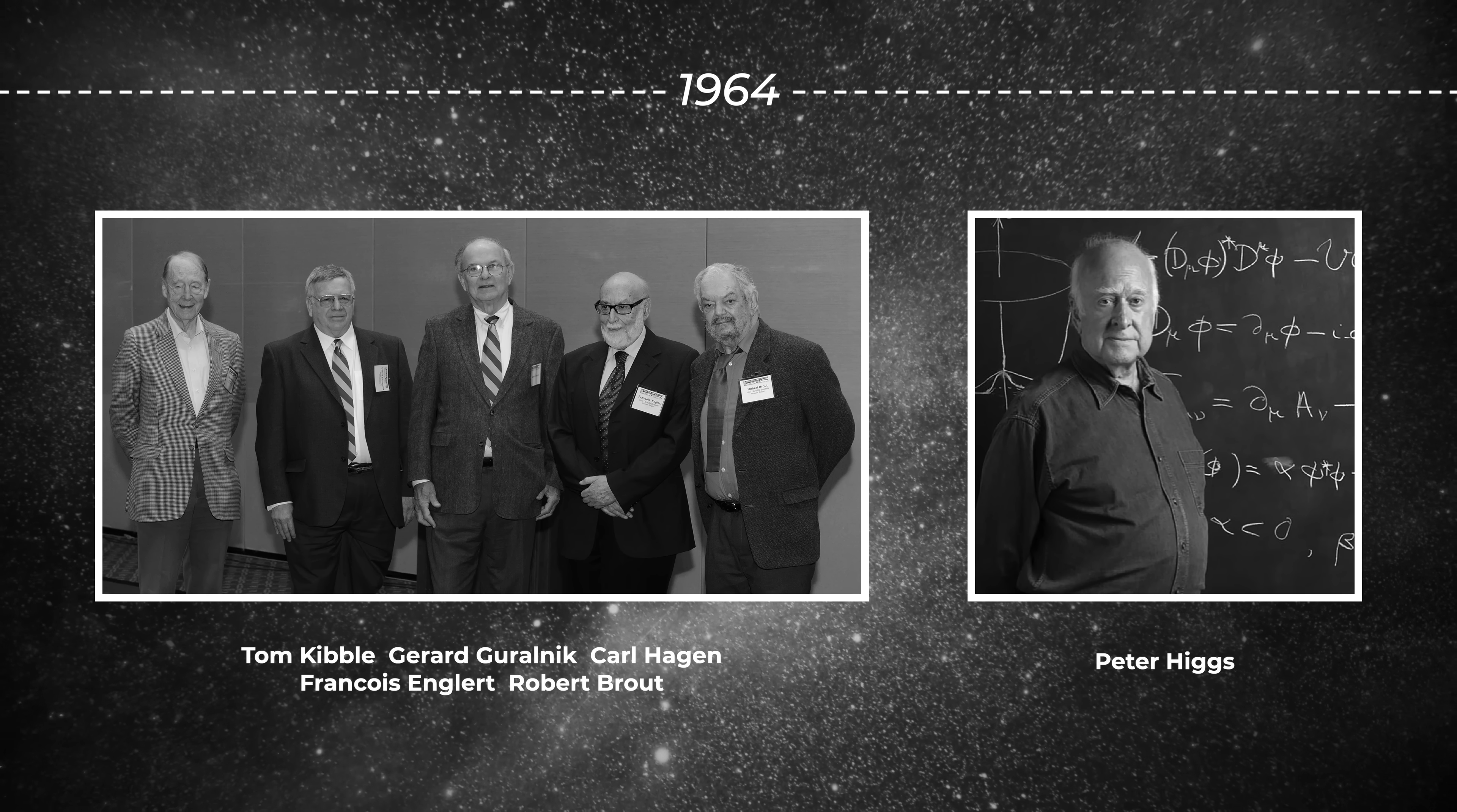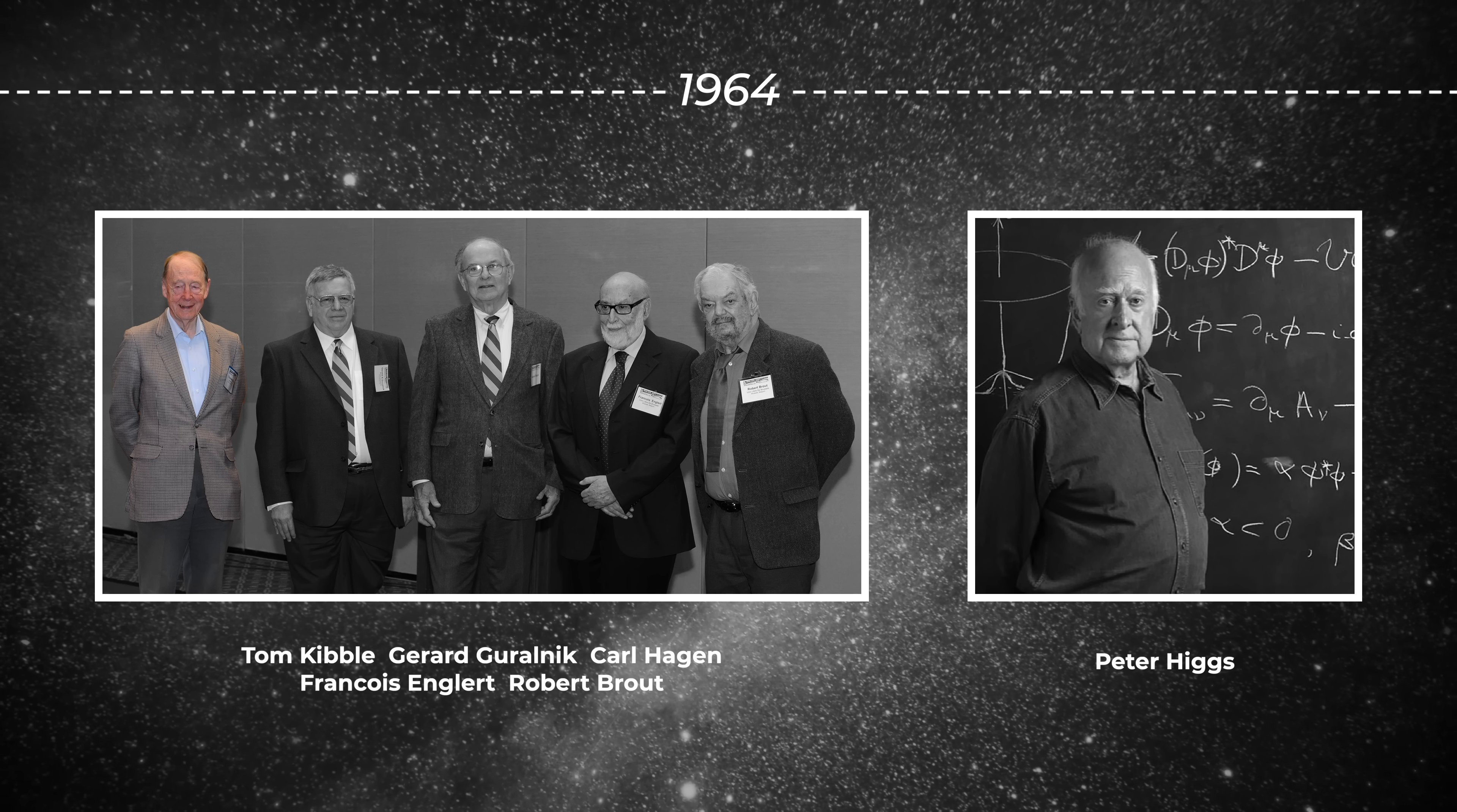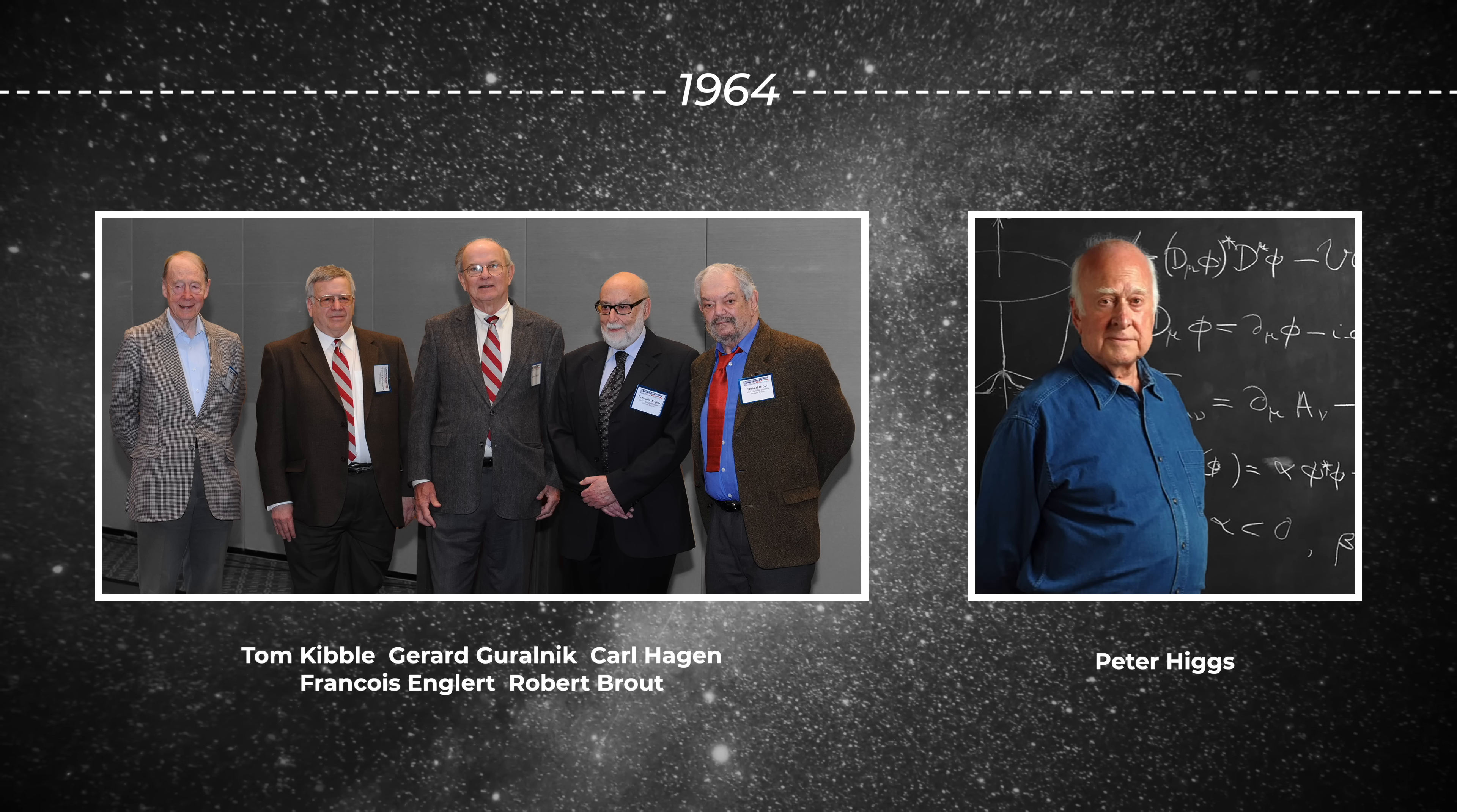In 1964, three groups of people worked out ways to add relativity into the theory. One group included Tom Kibble, Gerald Guralnik, and Carl Hagen. Another group included Francois Englert and Robert Brout. The third group was Peter Higgs, working alone.